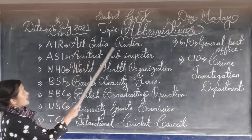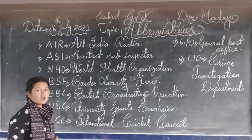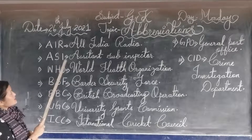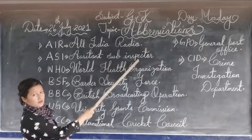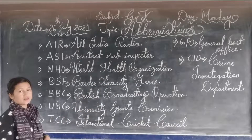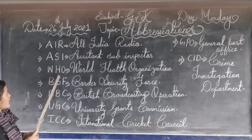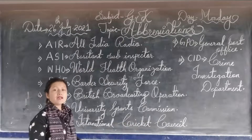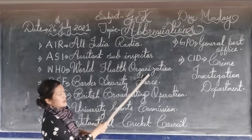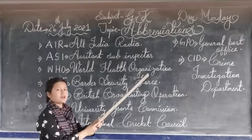The full form of A-I-R-L is All India Radio. The second one is A-S-I — Assistant Sub-Inspector. The full form of ASI is Assistant Sub-Inspector. The third one is W-H-O. The full form of W-H-O is World Health Organization.